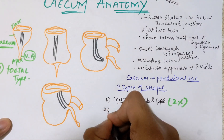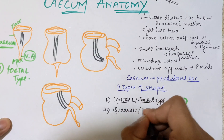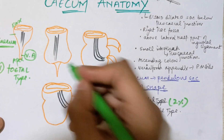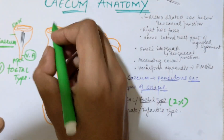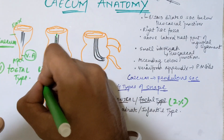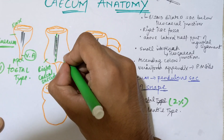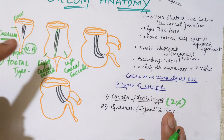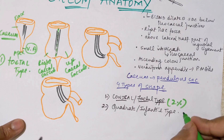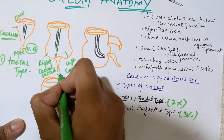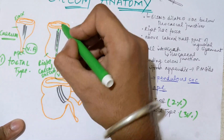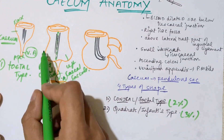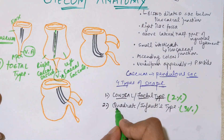The second shape is the quadrate or infantile type. In this, the cecum is divided into two equal halves — a right saccule and a left saccule of equal size — forming a quadrate shape. The vermiform appendix is again at the apex. This type is also uncommon, seen in around 3% of people.